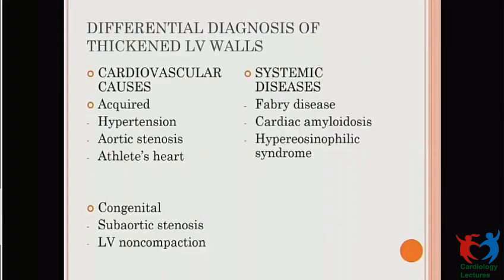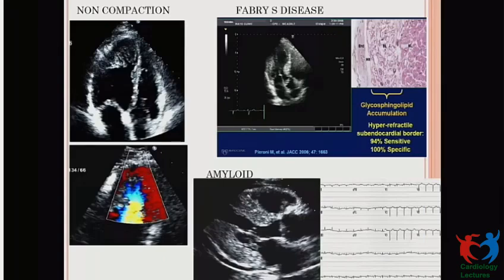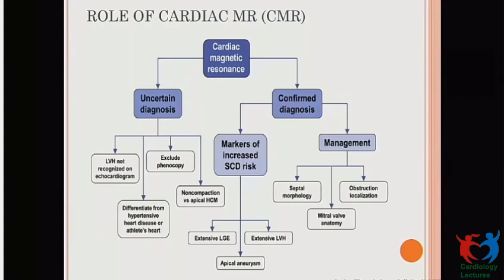Other differential diagnoses include non-compaction and amyloidosis. Non-compaction can mimic apical HCM — using color Doppler, blood can be seen flowing through the sinusoids. Fabry disease is a lysosomal glycogen storage disorder with deposition of glycolipids in interstitial spaces; hyperrefractive lateral subendocardial appearance is often suggestive, though endomyocardial biopsy is often required. Amyloid shows hyperrefractive spots throughout the myocardium — the so-called 'starry sky' appearance — with typical low-voltage ECG.